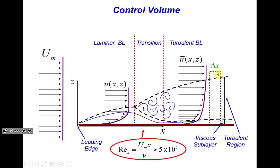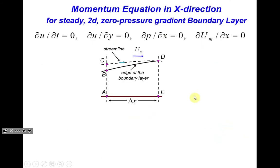The control volume is a volume with imaginary boundaries. For our consideration, we assume steady flow (no change in time), two-dimensional flow (no change across the flow in the transverse direction), and a zero pressure gradient boundary layer (pressure gradient along the flow equals zero, so external flow velocity doesn't change along the flow). We choose a control volume bounded below by the plate, on the sides by two vertical planes AC and ED separated by small distance δx, and above by a streamline.